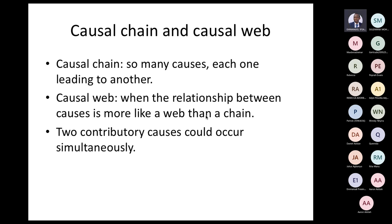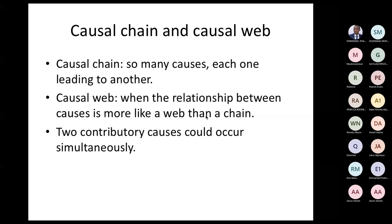Then we have causal chain and causal web. A causal chain is when there are many causes, each one leading to another. A causal web is when the relationship between causes is more like a web than a chain — several causes contributing to the same effect simultaneously. Two contributory causes occurring at the same time would be more like a causal web than a causal chain.